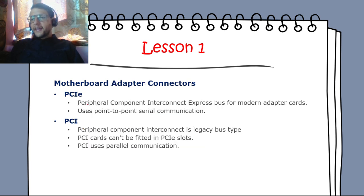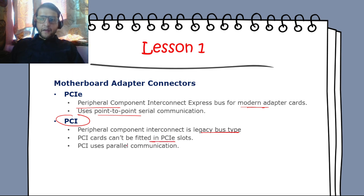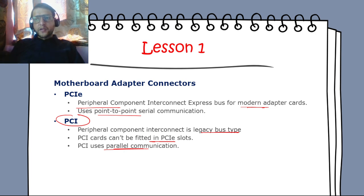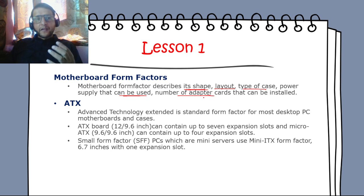PCIe — Peripheral Component Interconnect Express — is the modern adapter card bus using point-to-point serial communication. The older PCI is a legacy parallel bus; a PCIe card cannot be fitted into a PCI slot. PCI uses parallel communication and PCIe uses serial communication. Motherboard form factor describes the shape, layout, case type, and power supply used, and determines how many adapter cards can be installed.